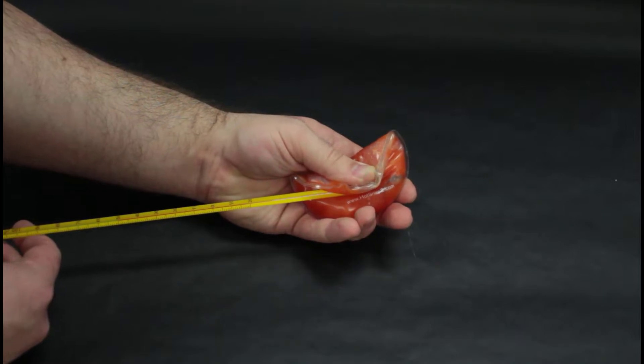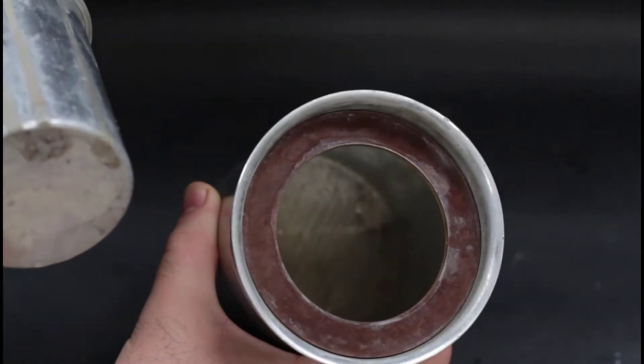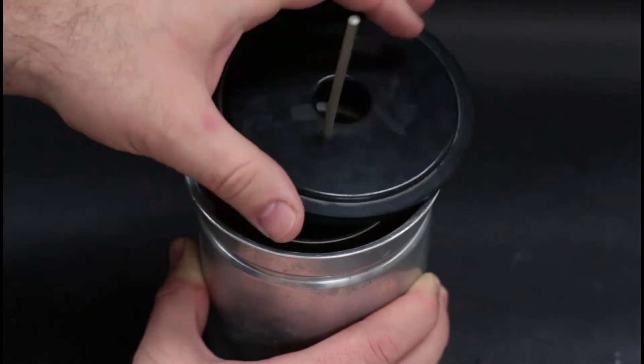A calorimeter is just an insulated container. In this lab, we'll be using some metal calorimeters, they're kind of nice, but you can actually construct one from two styrofoam cups and it works really well.